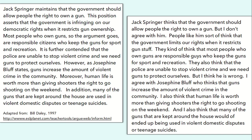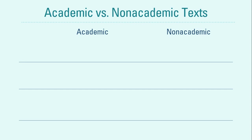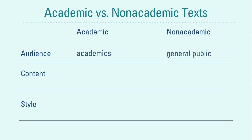Now that we have seen the differences between these two paragraphs, we understand the differences between academic and non-academic texts. Academic and non-academic texts can be differentiated based on a few aspects. First is the audience. The audience of academic texts are what we call academics — people engaged in educational practices or activities, such as professors, teachers, researchers, scholars, and students.